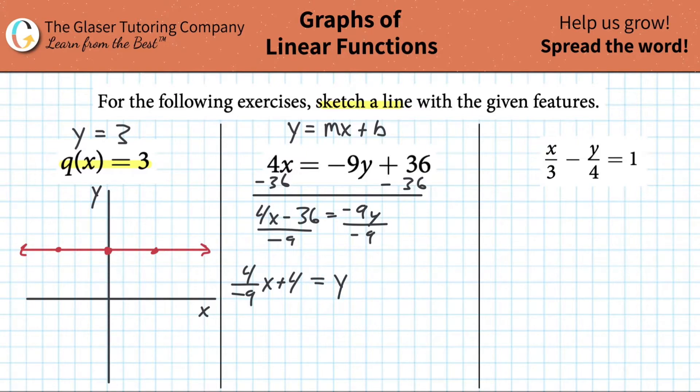y will equal, you can distribute this negative 9 to each numerator value. So it basically would be 4 over negative 9 times x. Now remember, negative 9 into a negative 36 now is going to be a positive 4, so plus 4. Let me just move that down. I got a little off track. And this is now basically the equation.